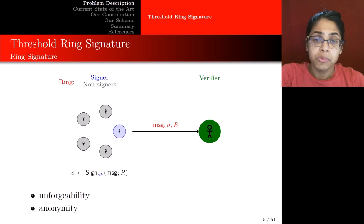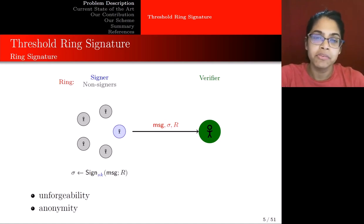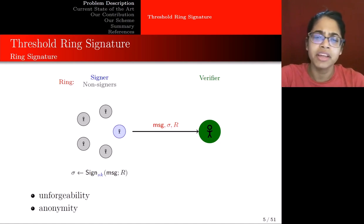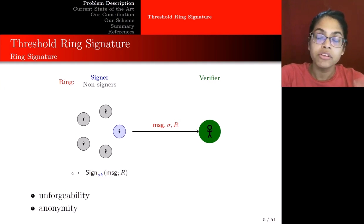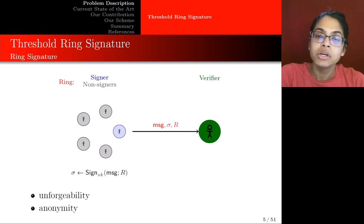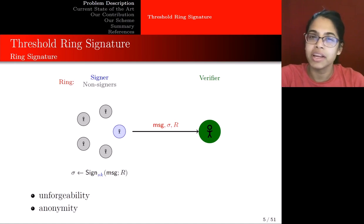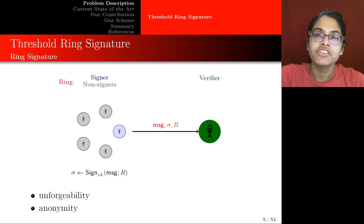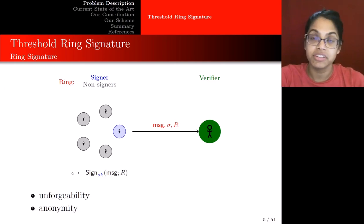The next word is ring. With the ring, we have a signer and the remaining members of the ring as non-signers. One of the members of the ring is going to sign the message with respect to their secret key and also with respect to the ring. When the verifier receives the signature, he's going to be convinced that it came from somebody in the ring, but he doesn't know whom. Therefore we additionally have this property of anonymity. So we still have unforgeability and we additionally have anonymity.